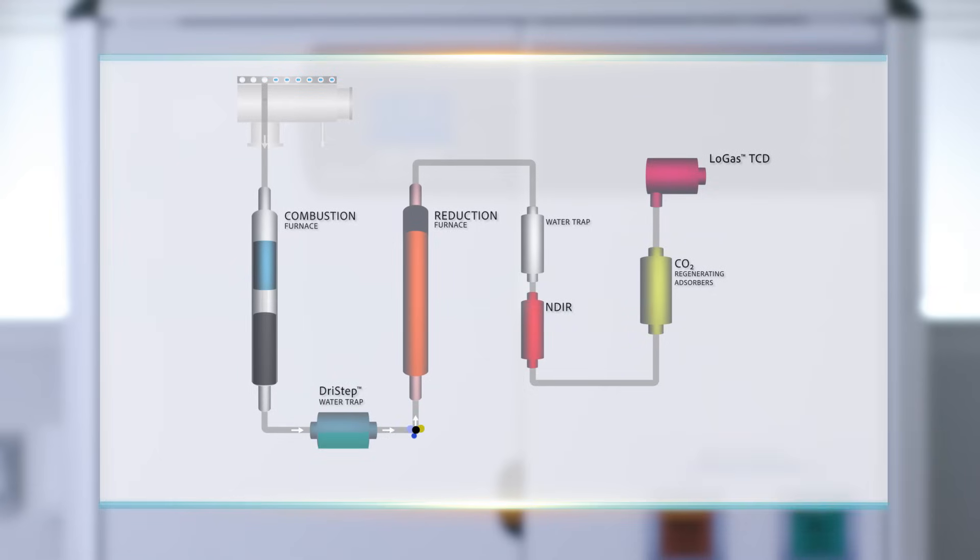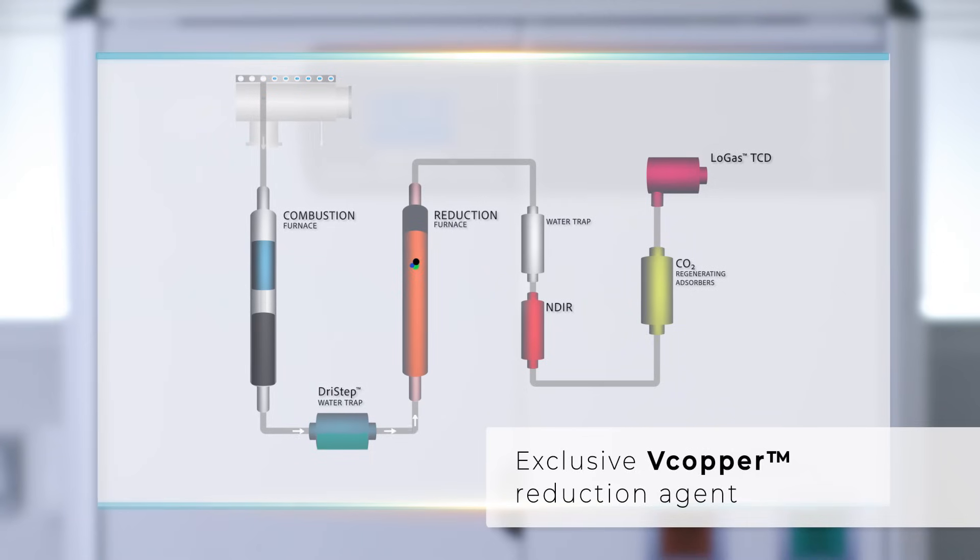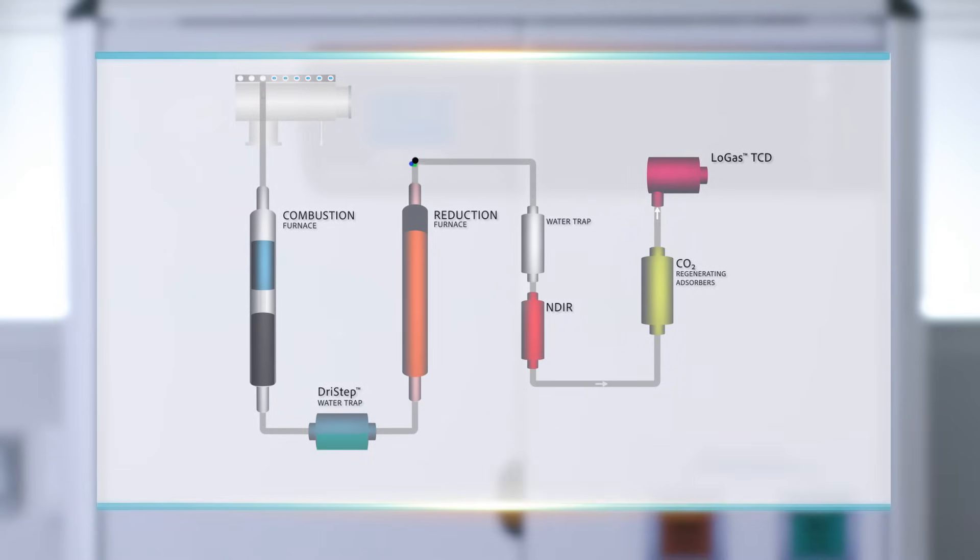The combination of high temperature and the exclusive B copper reduces nitrogen dioxide to molecular nitrogen.